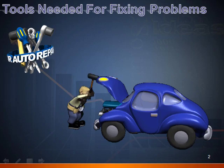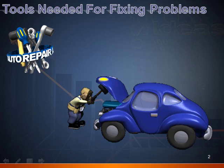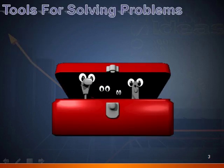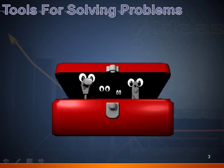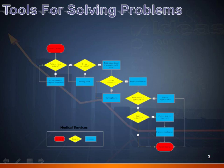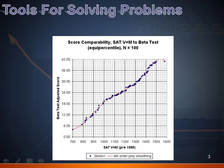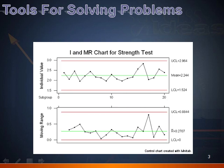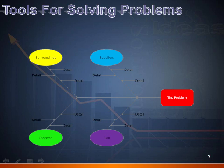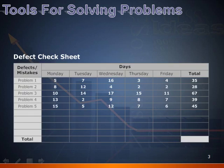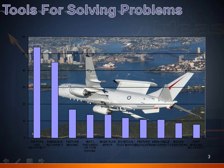When you encounter problems with your car, you need to know what tools are needed to fix the problem and how and when to use each tool. The same is true when you want to fix problems within your own company. There are seven basic tools that are used in quality and they are: Flow Charts, Scatter Diagrams, Control Charts, Histograms, Cause and Effect Diagrams, Check Sheets, and of course the Pareto Diagram, which is our topic of discussion today.